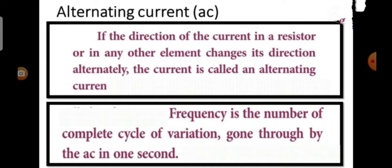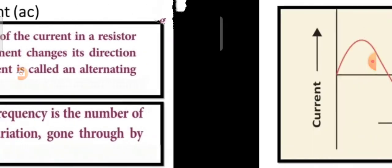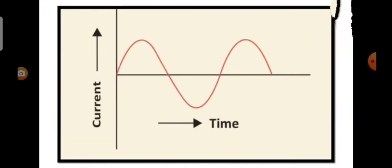Frequency is the number of complete cycles of variation gone through by the AC in one second. In AC, the electrons do not flow in one direction because the potential of the terminals vary between high and low alternately. Thus the electrons move to and fro in the way of carrying alternating current.